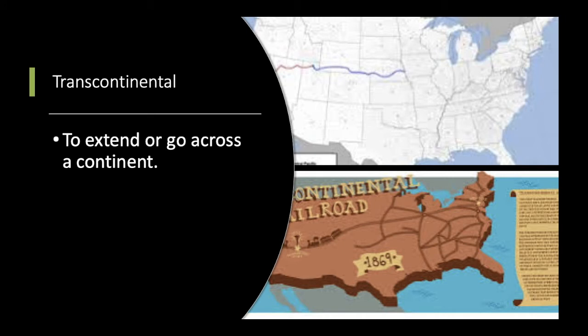Next word is transcontinental, which means to extend or go across the entire continent. When we talk about the railroad, we're talking about a transcontinental railroad — a railroad that extends from the east coast to the west coast. If you break it down, trans means to go across, and continental is the continent. So it's a pretty basic term if you break it down.